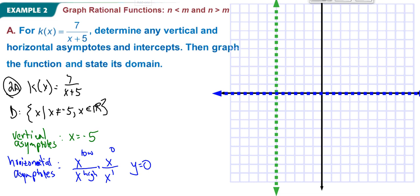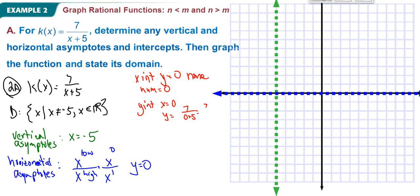Now I want to find x-intercepts and y-intercepts. X-intercepts are when y equals 0, so we look at when the numerator equals 0. But there's no variable in the numerator, so there are none — the graph won't touch the x-axis. For the y-intercept, we put in x equals 0: y equals 7 over 0 plus 5, which is 7 fifths, or 1.4. So the y-intercept is at (0, 1.4).